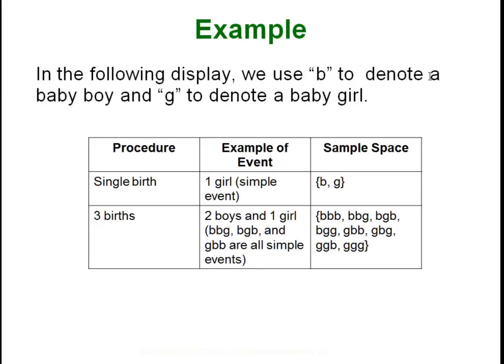You can see that within that event are all the simple events of how it happens: boy-boy-girl, boy-girl-boy, girl-boy-boy. And then the sample space is just the collection of all eight different ways you could have three kids.